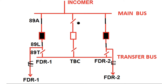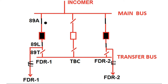This is the same for feeder 2, and this is the TBC bay — that is the transfer bus coupler bay. 89A is the main bus side isolator and 89T is the transfer bus side isolator for the TBC bay. It is called the TBC bay or transfer bus coupler bay because it couples the main bus with the transfer bus. Now, feeder 1 and feeder 2 are both taking power from the main bus via 89A and 89L in closing condition and the breaker is closed.